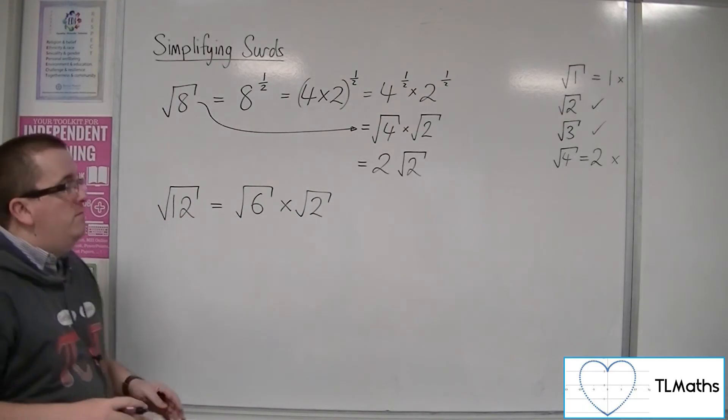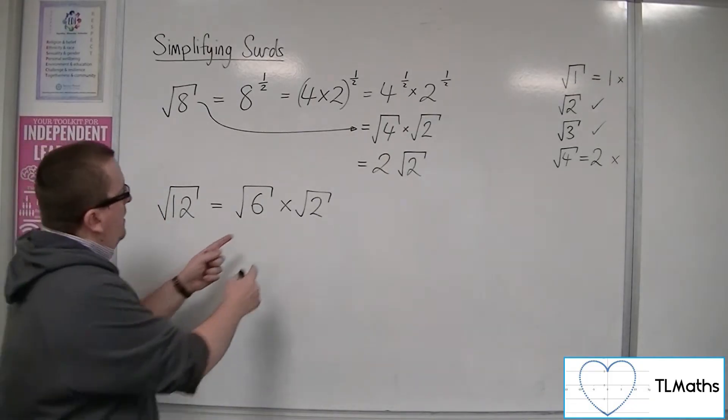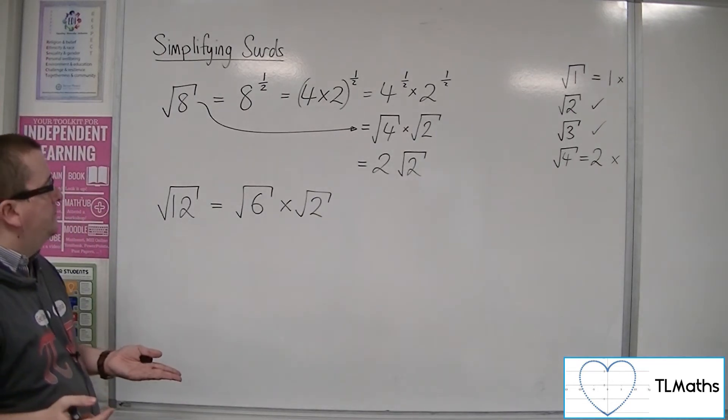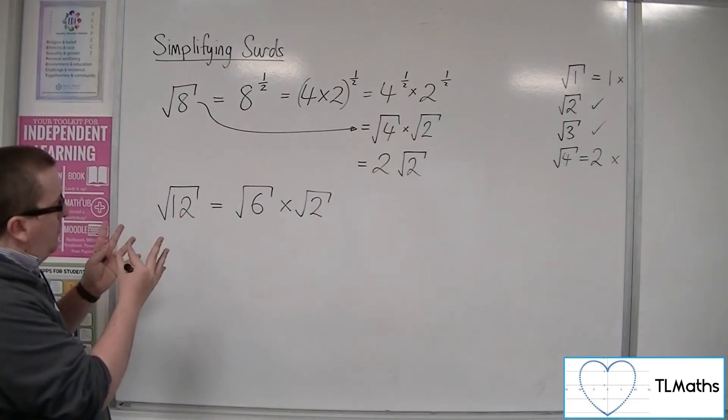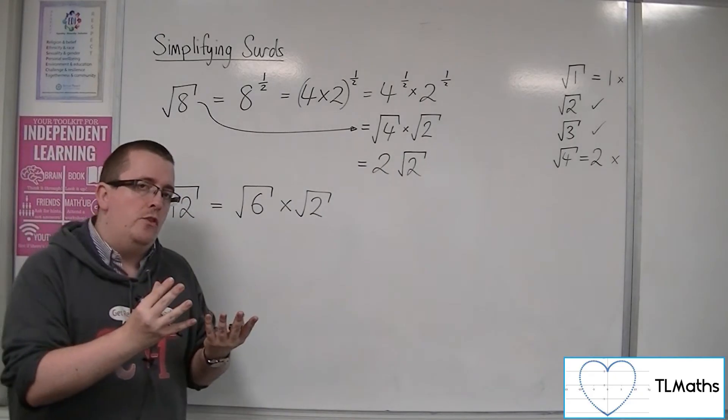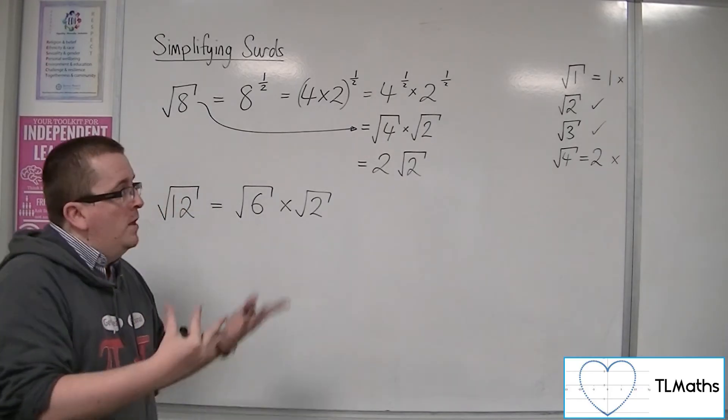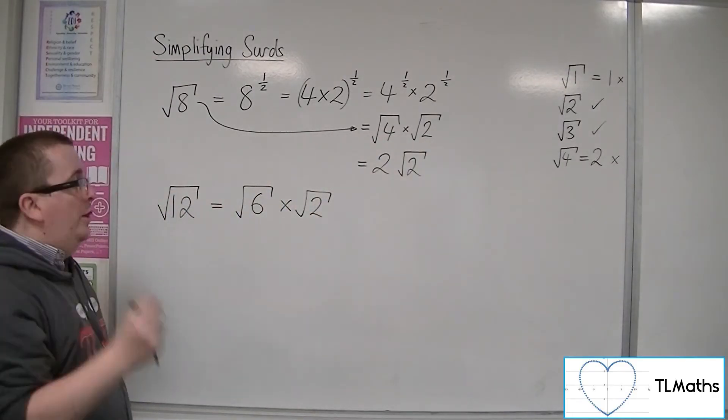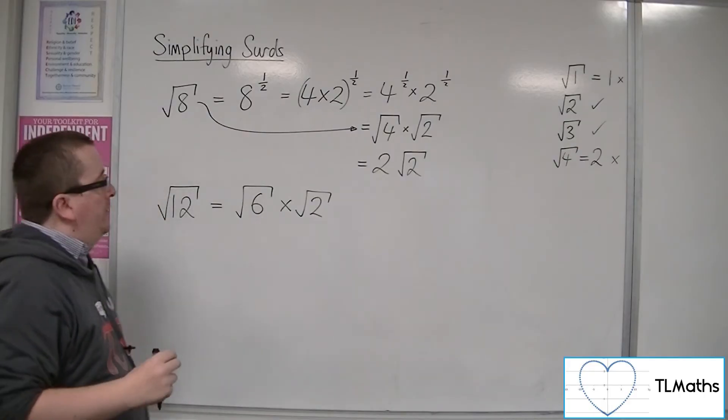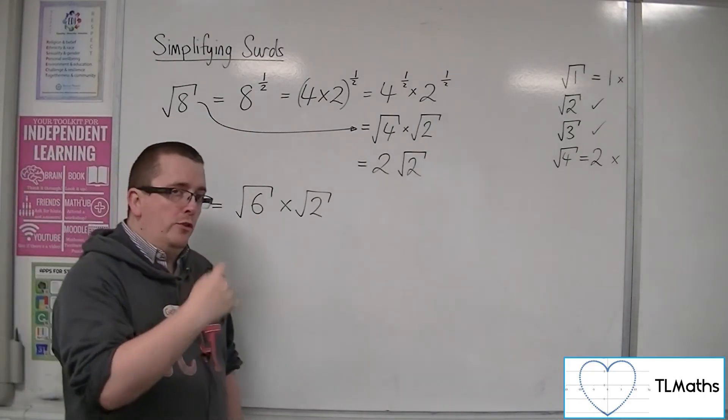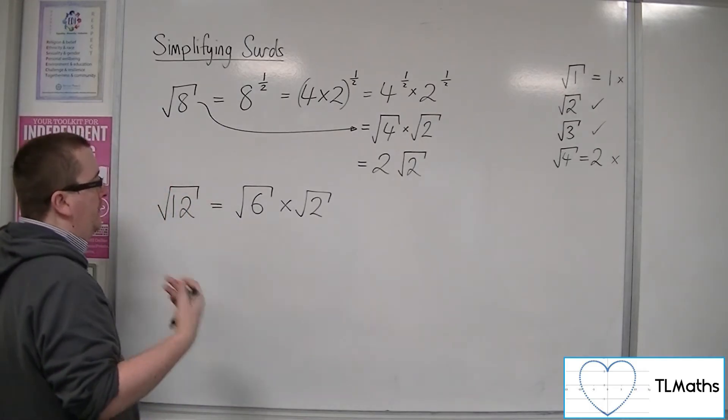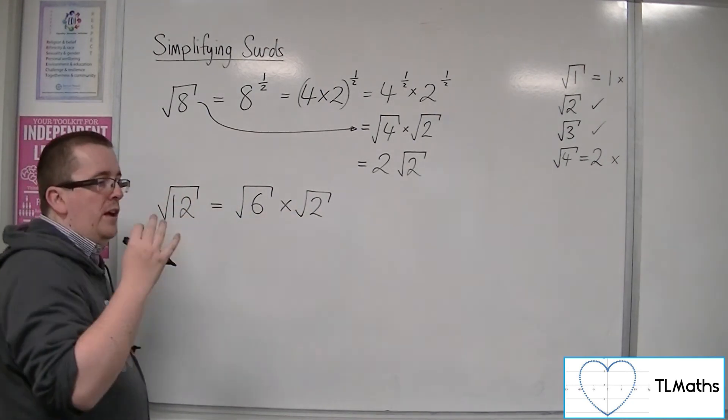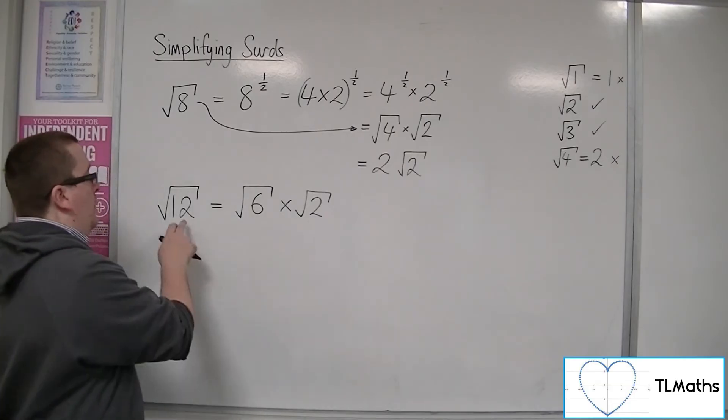But there's no real point in doing that because neither of these two can I simplify down any further. And the reason why I can't simplify them down is because neither of them are square numbers. As we were looking for square numbers when we identified surds up there, we're looking for square numbers here. So it is important that you know your square numbers when simplifying a surd.